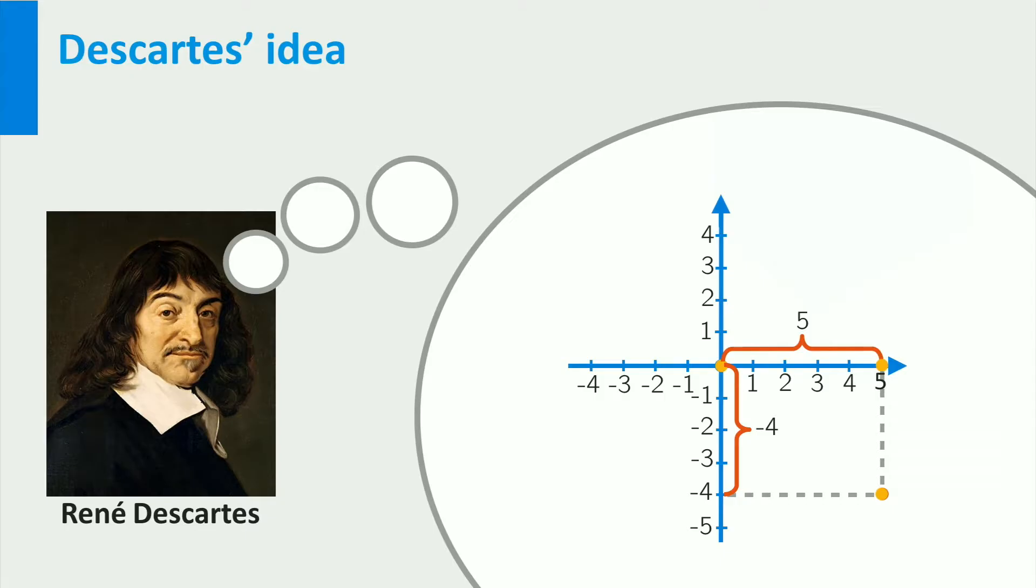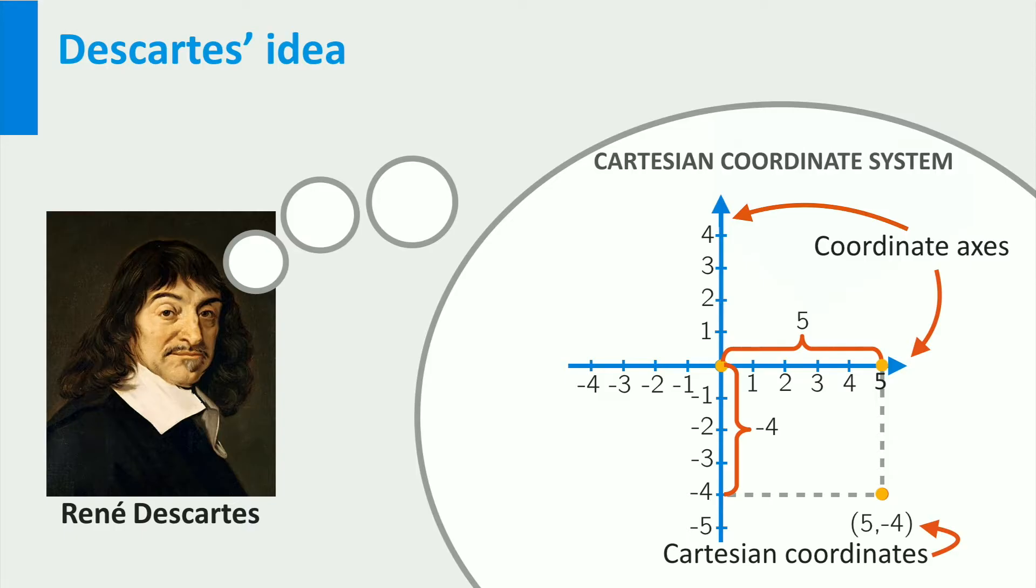This way, you can encode your position in exactly two numbers. And these numbers are called the Cartesian coordinates of your position. The lines that we use to find these coordinates are called the coordinate axes. The whole setup is called a Cartesian coordinate system in the plane, and we can use the setup to associate coordinates to any point in the plane.